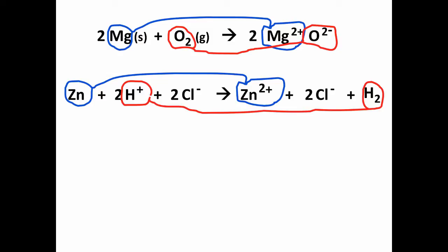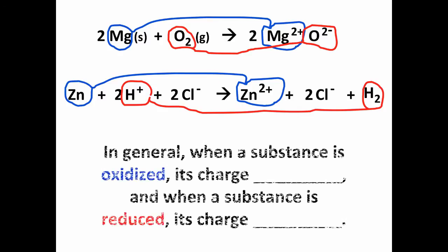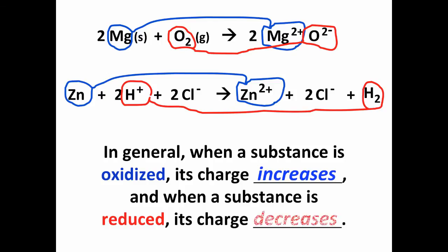Again we have an oxidation-reduction reaction. In general, if a substance is oxidized it's going to lose electrons, which means its charge increases. When a substance is reduced it gains electrons and its charge decreases.